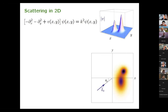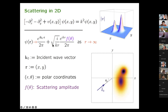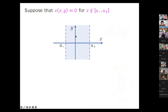How does this generalize to two dimensions? Again, we define scattering through a short-range potential, and asymptotically the solutions have the form of an incident wave plus a scattered wave. K₀ is the incident wave vector, θ₀ is the incidence angle, R is the position vector in polar coordinates, and F(θ) is the scattering amplitude — the aim is to find this for a given potential. Suppose the potential is non-zero only within a strip in the xy-plane; outside the blue region it vanishes. The general case is obtained by taking the limits a± to ±infinity.